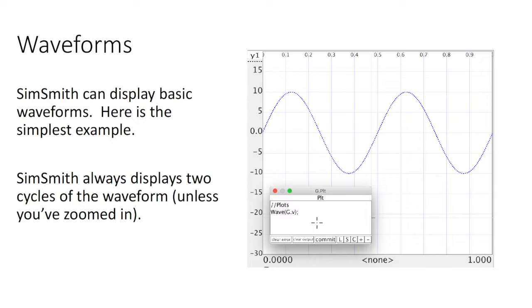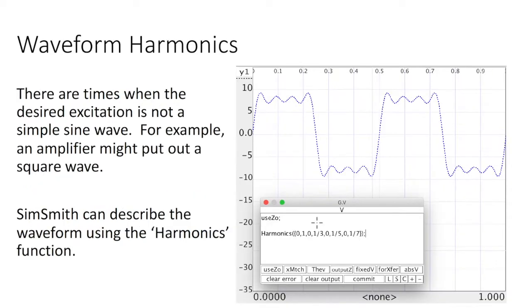Now, it's not always the case that you want a pure sine wave. There are times when you want something else. So for example, one might want a square wave. And SimSmith allows you to specify the harmonics of your generator waveform. In this case, we're using a square wave or an approximation of a square wave. And down here, you can see the harmonics statement,